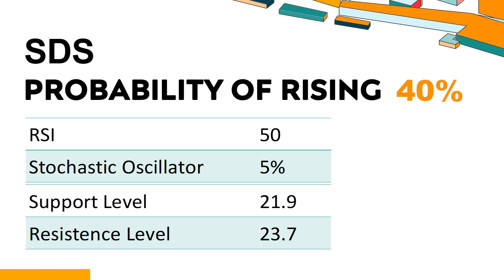Trend Outlook: SDS has a 40% probability of rising stock price. When the probability of rising is lower than 50%, it means that the probability of falling is relatively high. Combining multiple technical analysis indicators, SDS has four bullish signals and four bearish signals. SDS's short-term support level is 22.1. If it falls below 22.1 during the session, it will have a chance to test 21.9.